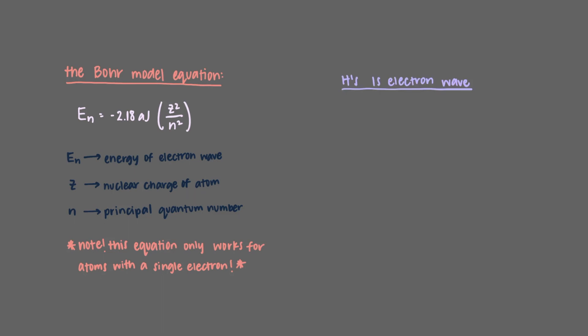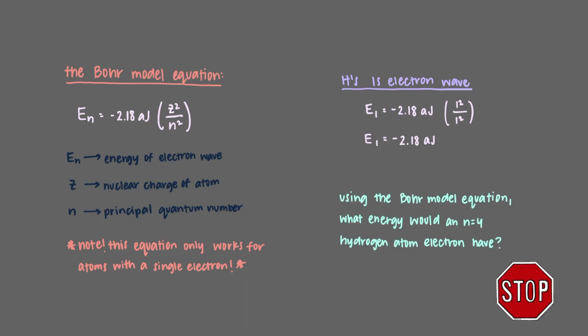That means that the hydrogen atom's 1s electron wave has energy E sub 1 equals negative 2.18 attojoules. Using the Bohr model equation, what energy would an n equals 4 hydrogen atom electron have?